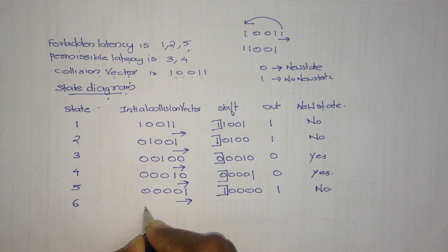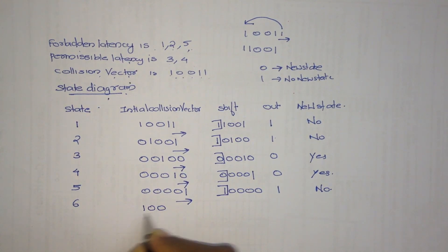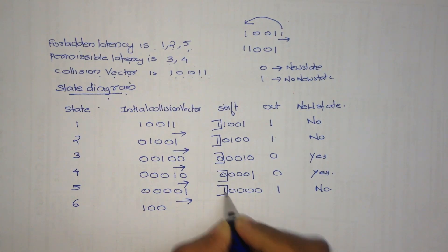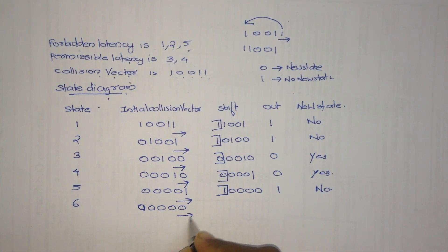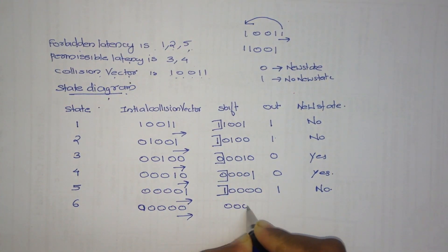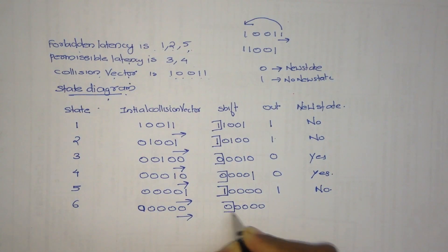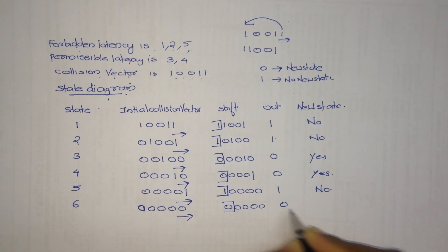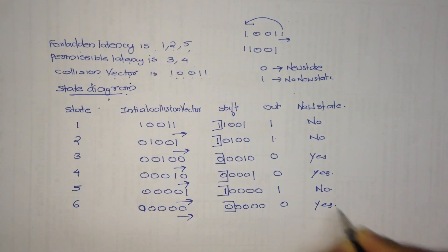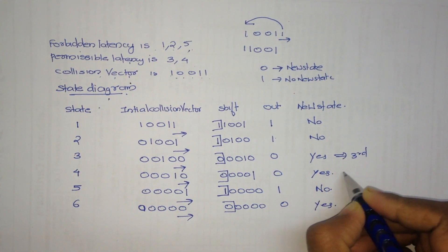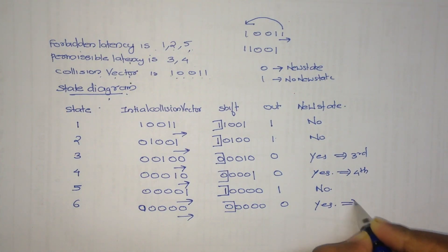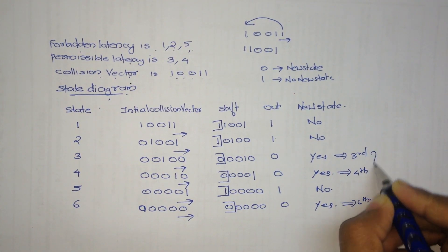At the sixth state, there is a 1, so we convert it to 0, giving 0, 0, 0, 0, 0. We perform right shift, which gives 0, 0, 0, 0. We omit the first value, which is 0. Therefore a new state is formed. So during the third, fourth, and sixth steps, a new state is formed.